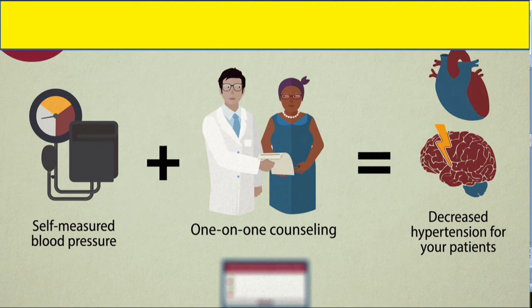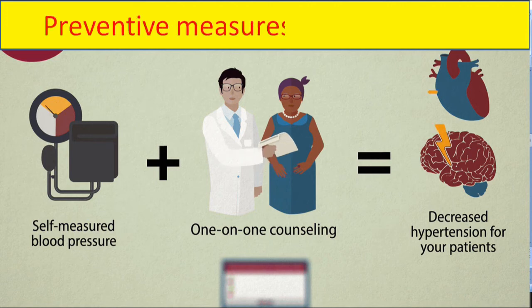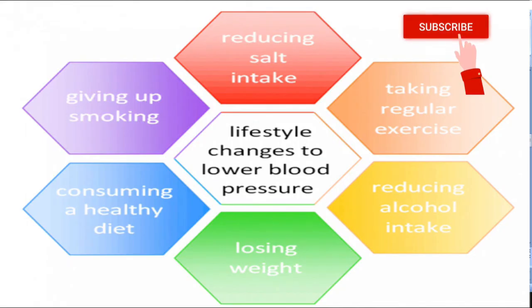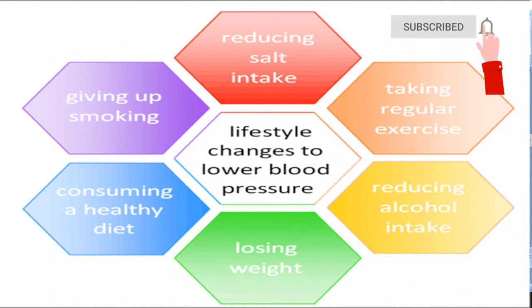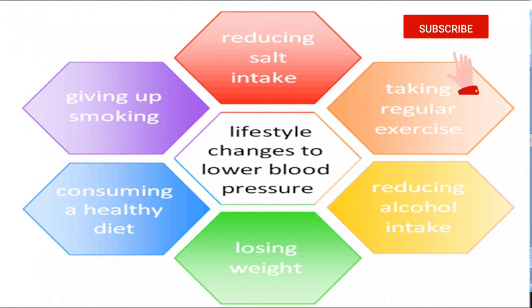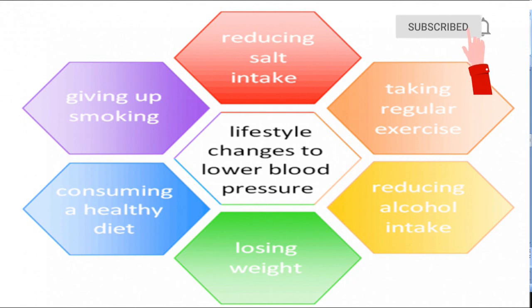Preventive measures of hypertension. Hypertension can be prevented by regular health check-up or regular blood pressure check-up, reducing salt intake, giving up smoking, consuming a healthy diet, losing weight, reducing alcohol intake, or taking regular exercise. These all activities help to reduce blood pressure and prevent hypertension.